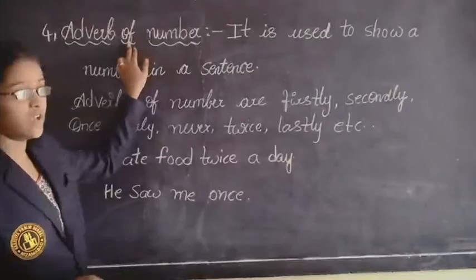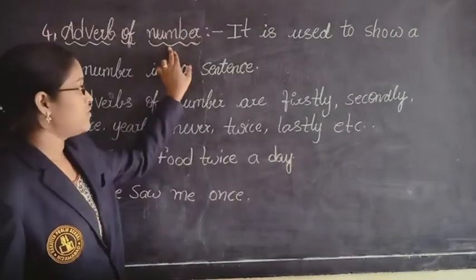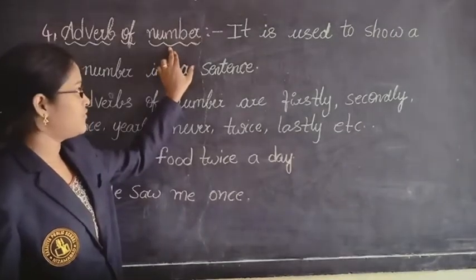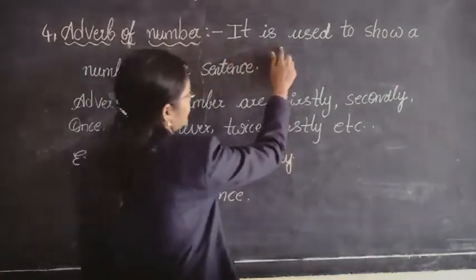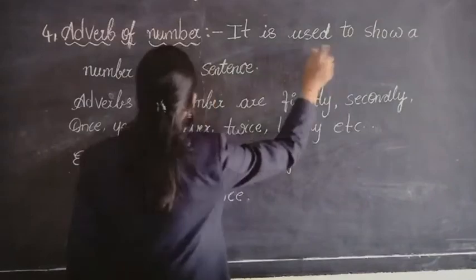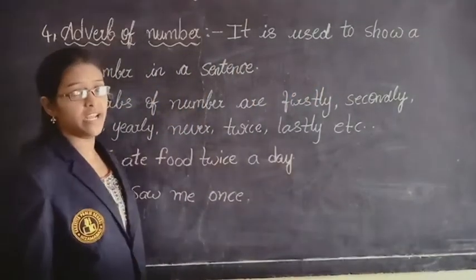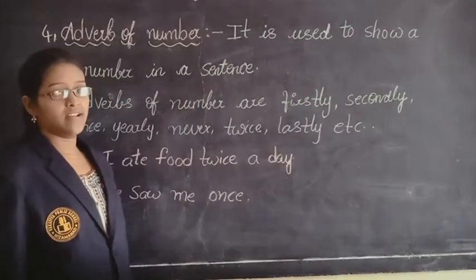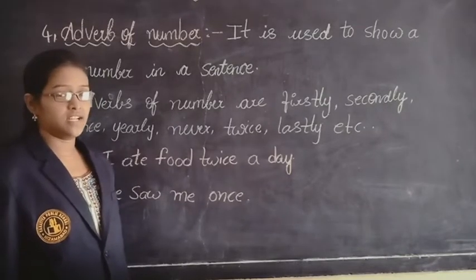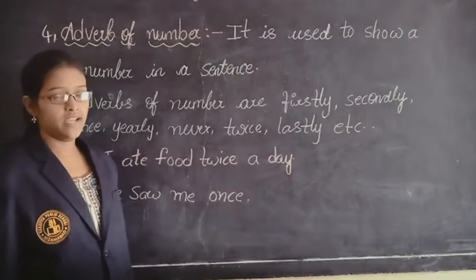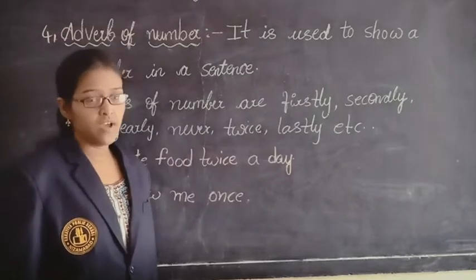This is the fourth kind of adverb. What is adverb of number? Adverb of number is nothing but it is used to show a number in a sentence — like once, twice, secondly, firstly, lastly, never. So these are the adverbs of number.